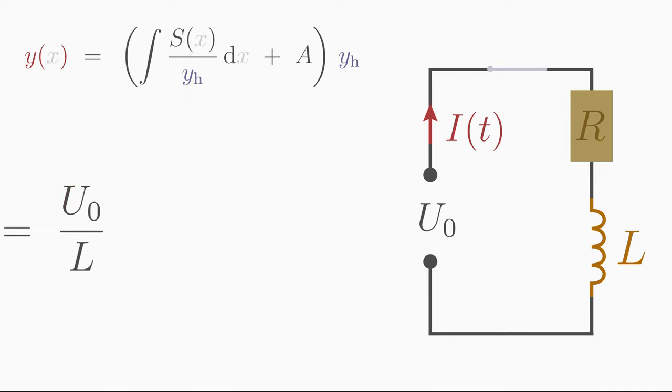Using Kirchhoff's laws, we can set up the following differential equation for the current I. Remember that the dot above the I means the first time derivative. This is an inhomogeneous linear differential equation of first order.